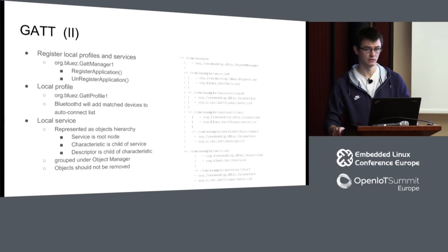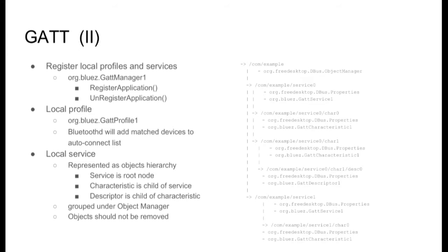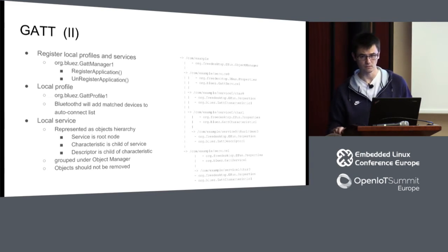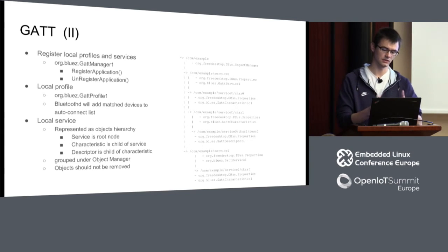If you want to expose your own GATT database to remote devices, you use the GattManager API and register your own application. You create a hierarchy of D-Bus objects in your application with a D-Bus object manager at the root, which allows BluetoothD to examine what kind of GATT database should be created, what properties you want, and so on. Then you register your application using RegisterApplication on GattManager. That creates a GATT server.